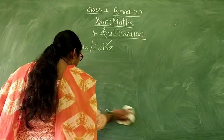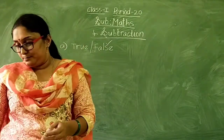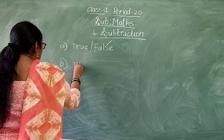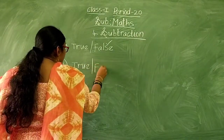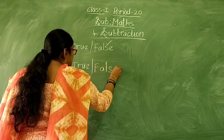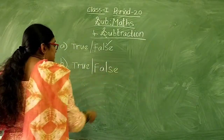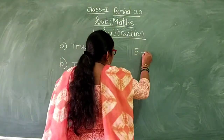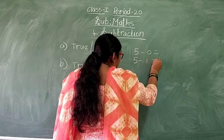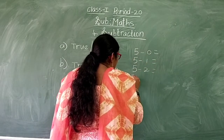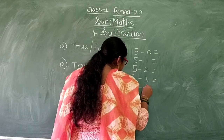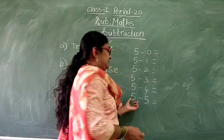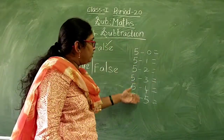Another one, B: number of subtraction families of 5. Now let us do the subtraction families by using 5. Let's start from 0: 5 minus 0, 5 minus 1, 5 minus 2, 5 minus 3, 5 minus 4, 5 minus 5 — up to 5 only, because they ask for the subtraction family of 5.